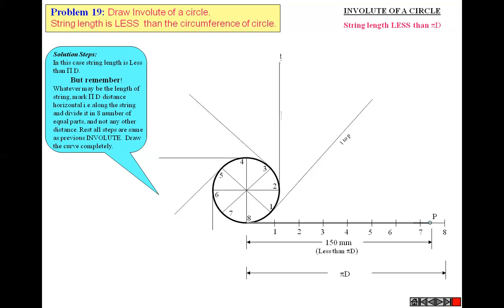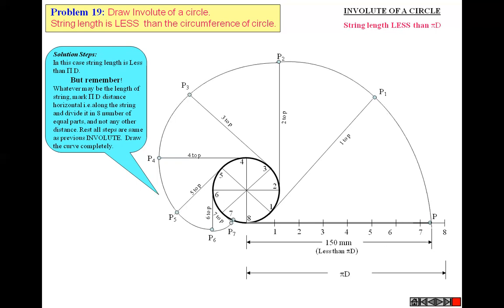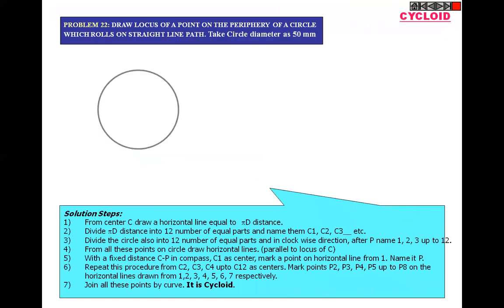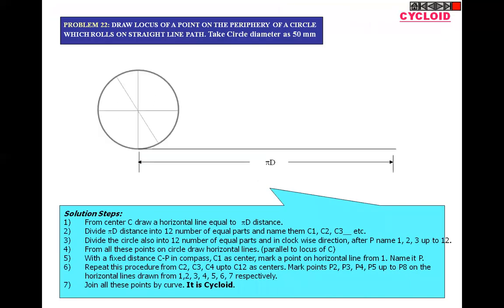Take the compass distance to point P and mark it. Similarly measure 2-to-P, 3-to-P, 4-to-P, 5-to-P, 6-to-P, and you can see the curve ends in between points 7 and 8.